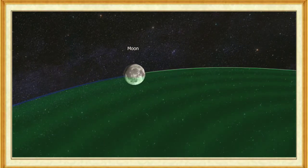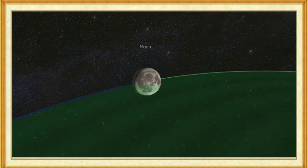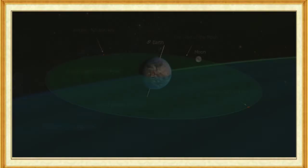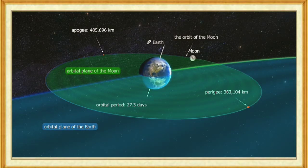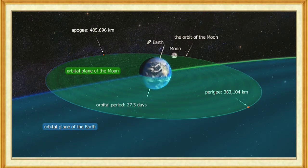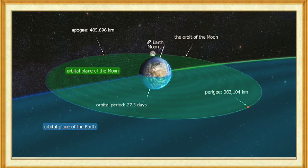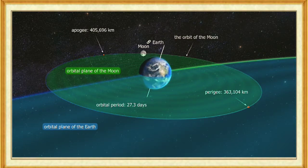At that time, it was about 20 times closer to the Earth than it is today. While orbiting the Sun, the Earth and the Moon orbit their common center of mass, located below the surface of the Earth. The Moon is in synchronous rotation around the Earth — its axial rotation and orbital period are the same. Therefore, we always see the same side.